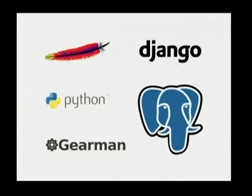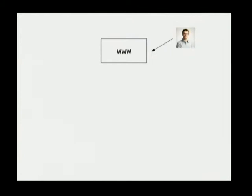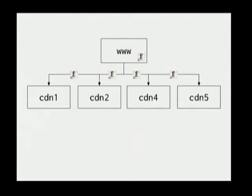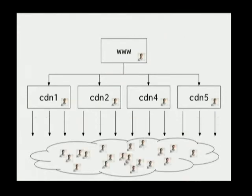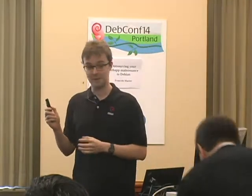The stack for LibreAvatar is pretty simple: Apache, Django, Python, Postgres, Gearman. It's a pretty standard thing for a Django application. And the architecture is a little bit special, but not very much. Basically, there's a master server that is the Django application — that's where users create an account and upload their photos. Then there's a bunch of mirrors that will receive the photo from the master, and then they are the ones who are actually serving it to third-party websites. The mirrors are all basically static — they don't have Django running.